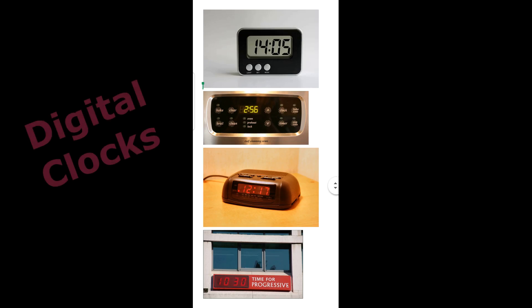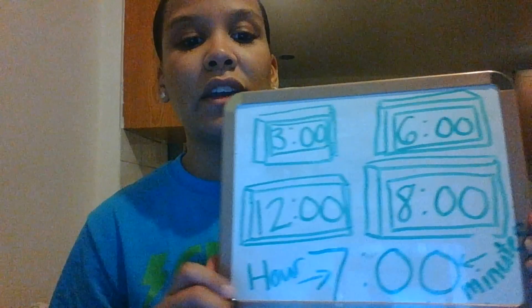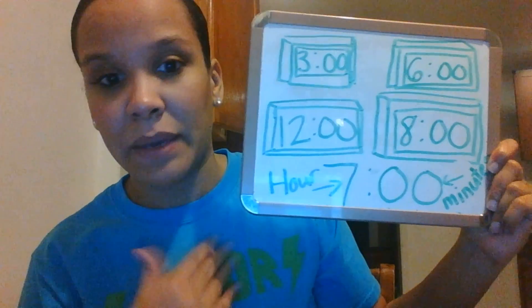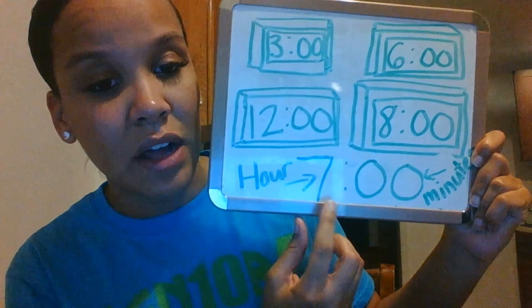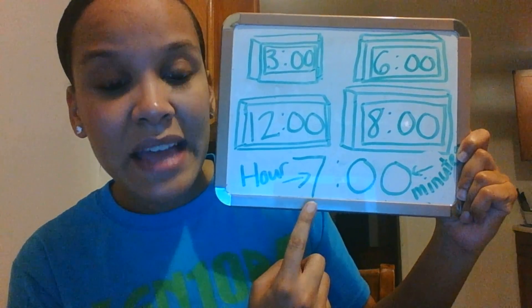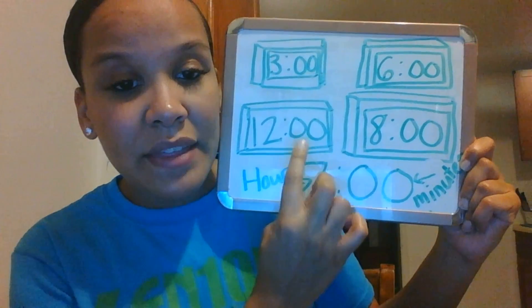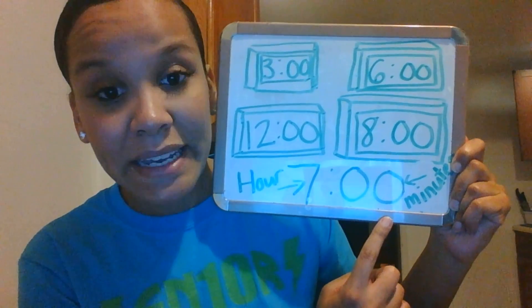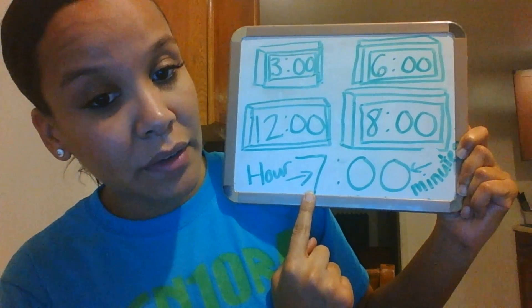I'll be posting some videos and in those videos you should have seen different forms of digital clocks. Now I have my handy whiteboard again, and here I have drawn different times on my digital clock. The number on the left side of the digital clock — I wrote a big one right here — it says seven. That one is our hour, just like our hour hand. Then we have our two dots, and the numbers that come after are our minutes. So this side is our hour and this side is how many minutes there are.